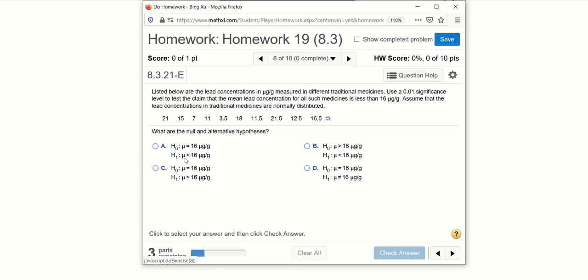Alright, so now let's see. The null hypothesis will be μ equal to 16. So B is not it. And the alternative hypothesis should be μ is less than 16. So we should choose A.